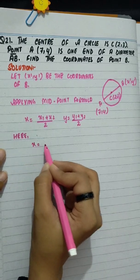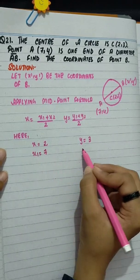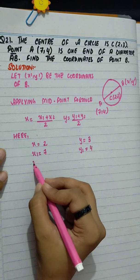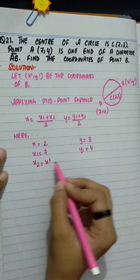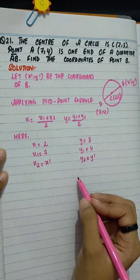Here x equals 2, y equals 3, x1 is 7, y1 is 4, x2 is x' and y2 equals y'.